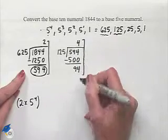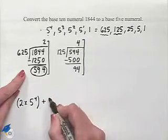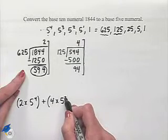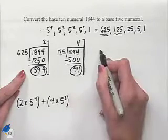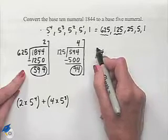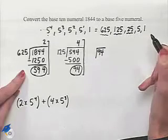This information tells us that we're going to add to our expansion 4 times 5 cubed. And now let's work with our remainder. We have a 94. We move down to the next power of 5 that we can work with, that's 25.